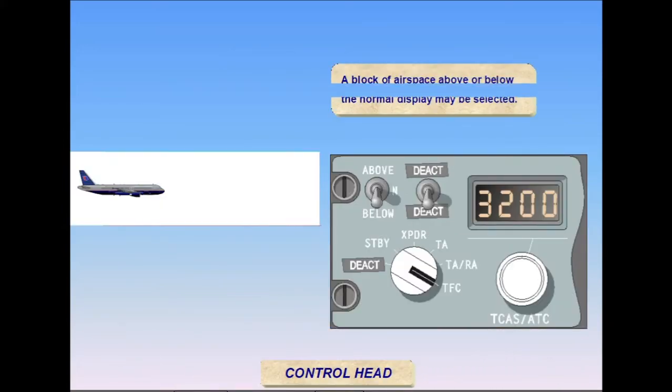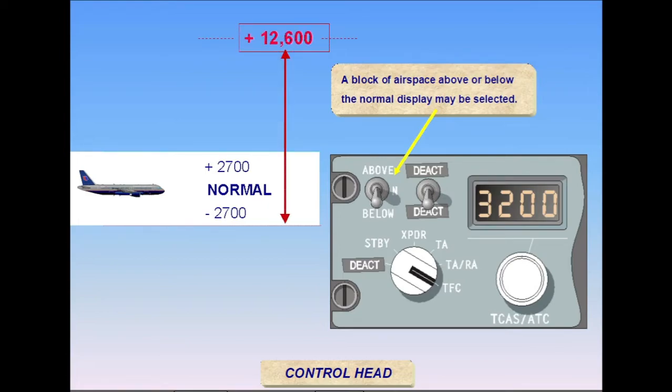The crew may select an altitude block above or below the normal altitude to be shown on the nav display. When in normal mode, the display coverage is 2,700 feet above and below your own altitude. When above or below is selected, the coverage includes an additional 9,900 feet for a total vertical coverage of 12,600 feet in the direction selected.